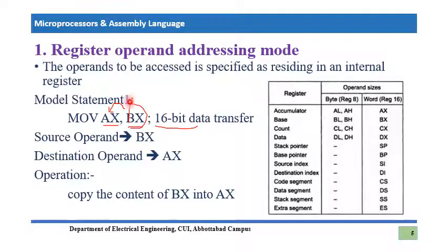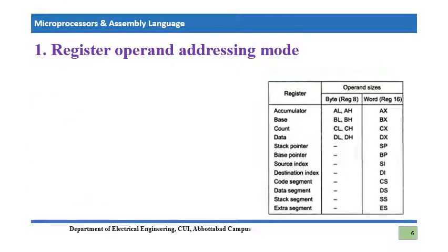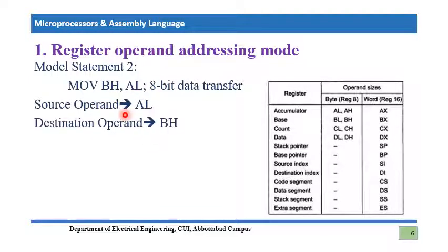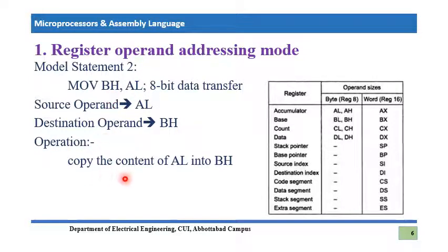Here is an 8-bit example: MOV BH, AL. The source operand is AL and the destination is BH. Whatever information stored in AL gets transferred into BH. Since AL and BH are both 8-bit registers, this is an 8-bit data transfer — copying the least significant byte of the accumulator register into the higher byte of the base register.